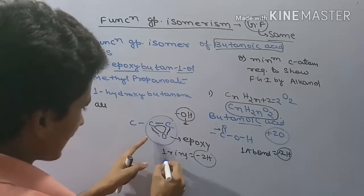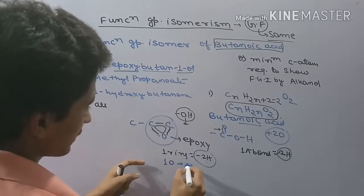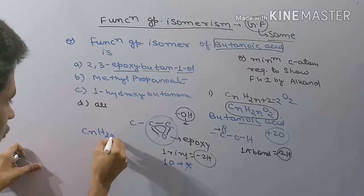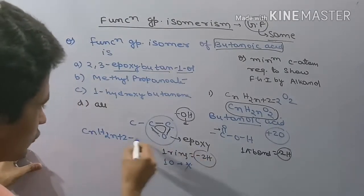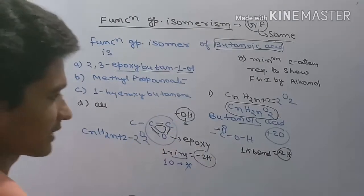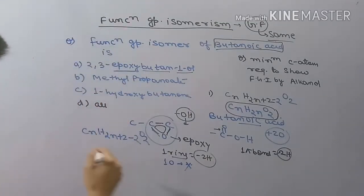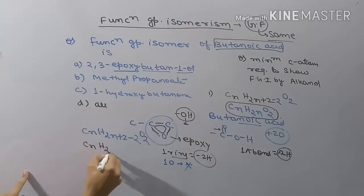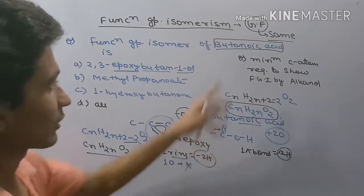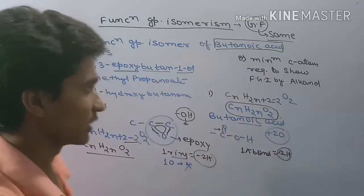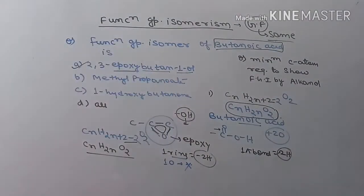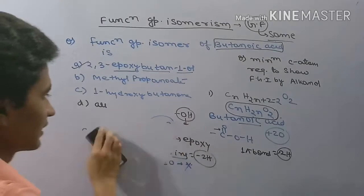For this epoxy compound, applying the formula: CₙH₂ₙ₊₂ minus two hydrogens gives CₙH₂ₙ, and with oxygen we get CₙH₂ₙO₂. So 2,3-epoxybutane-1-ol also has the general formula CₙH₂ₙO₂, making it a functional group isomer of butanoic acid.